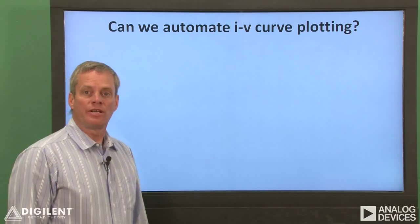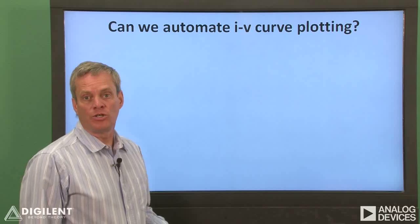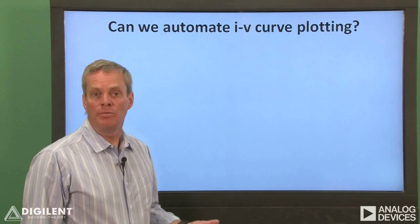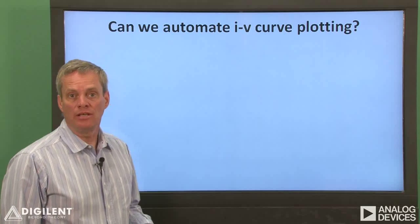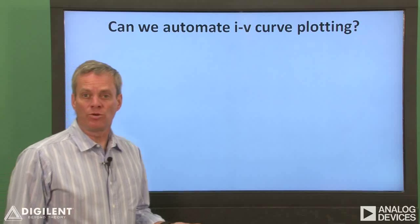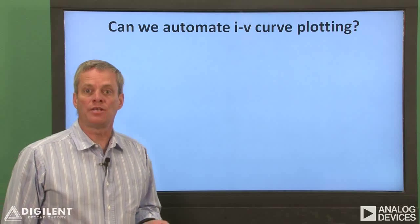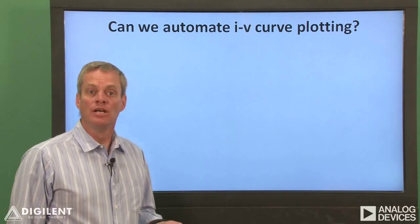Since voltage-current characteristics, or IV curves, are so important, it would be nice to plot them fairly easily. It turns out that there is a way to more or less automate plotting these characteristics.